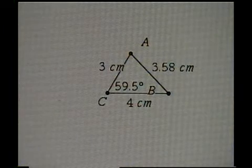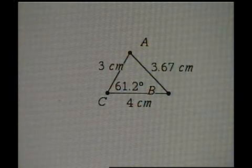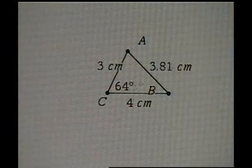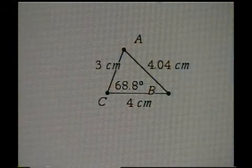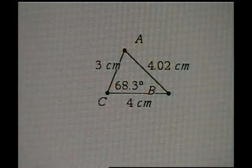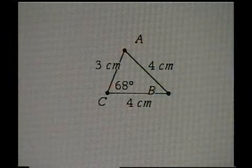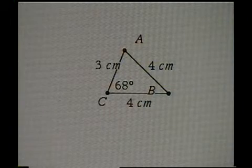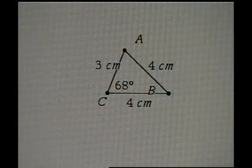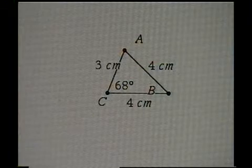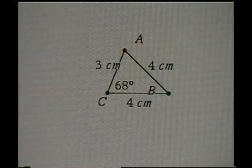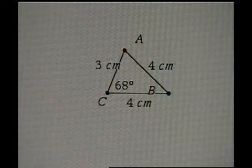Now let's make side C a length of 4. There's 4 — indicated 68 degrees on the screen, but you can record 67.98 degrees.